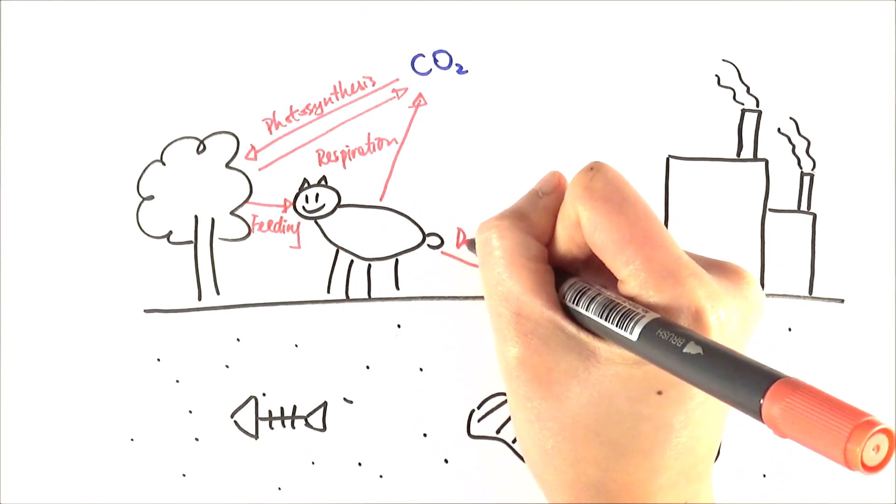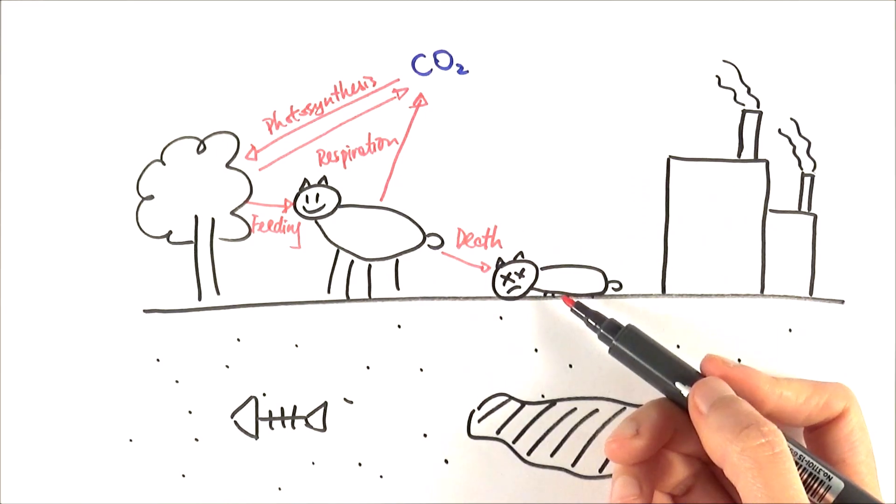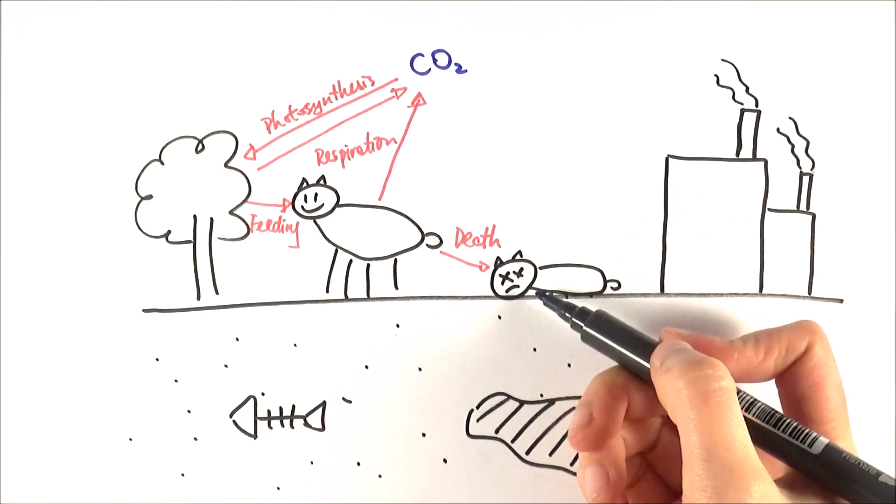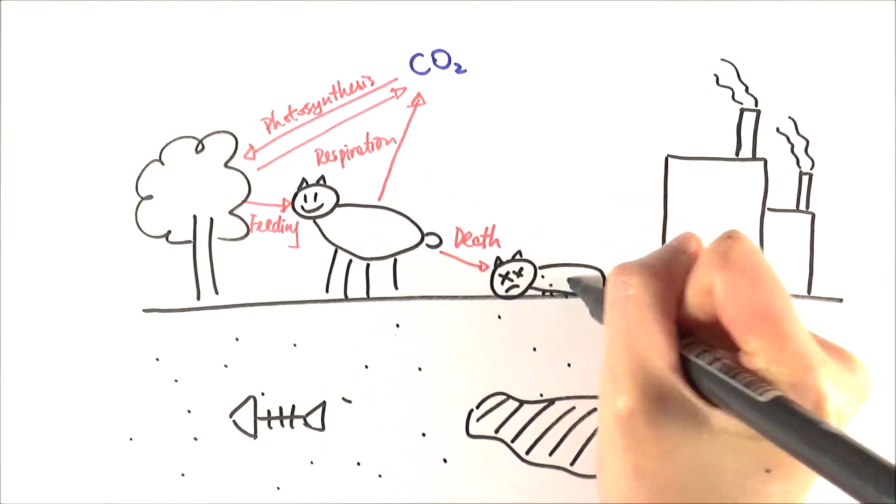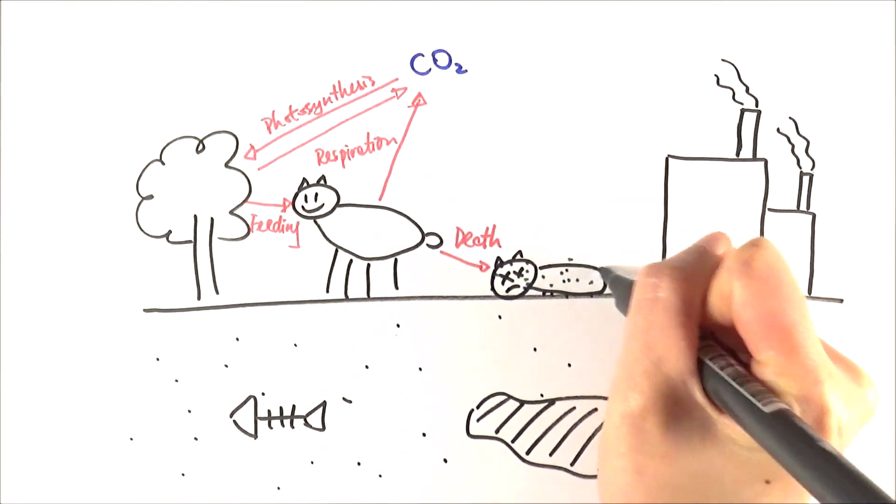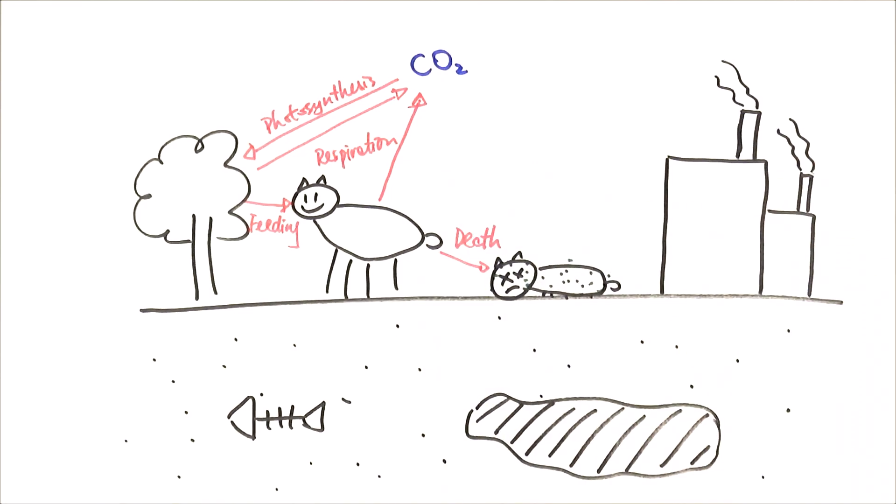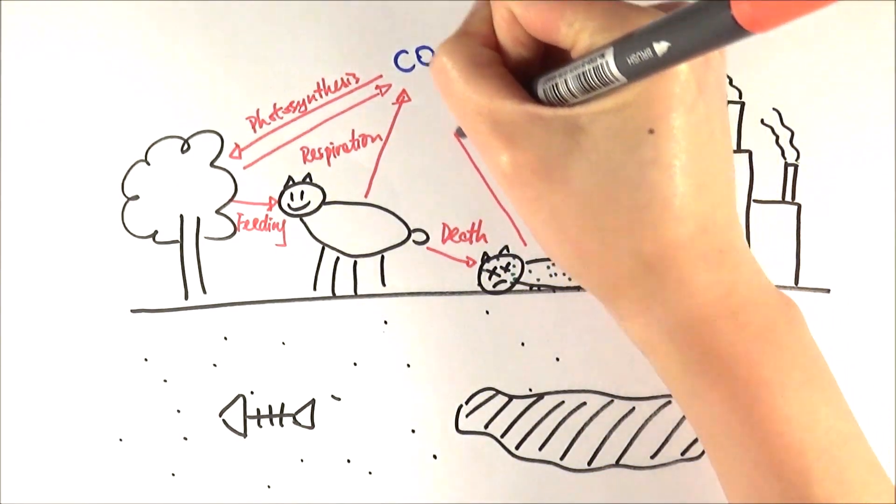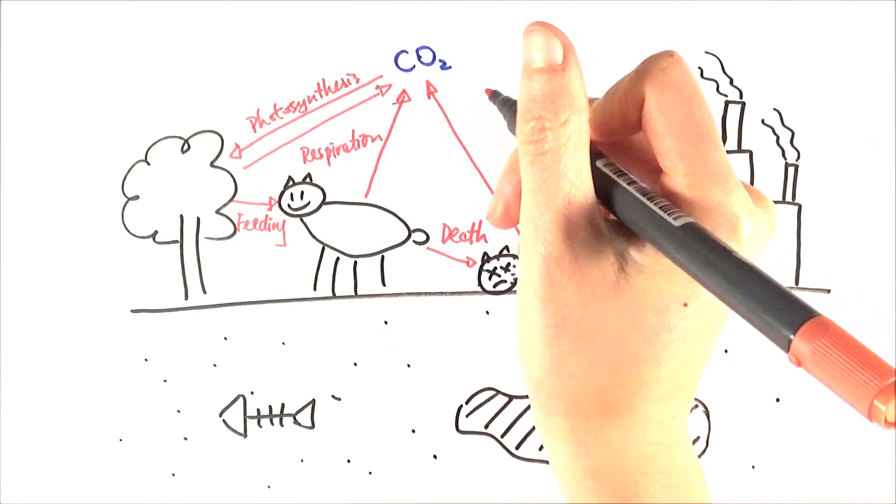After they've died, the carbon is still in the system. When organisms die, they have decomposers, as we mentioned earlier, around them. Imagine they are covered with decomposers. What the decomposers do is when they are digesting or decaying the organic matter, they actually release carbon dioxide as well. That's another contribution to the atmospheric carbon dioxide level.